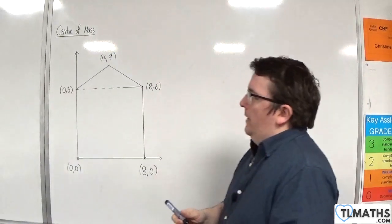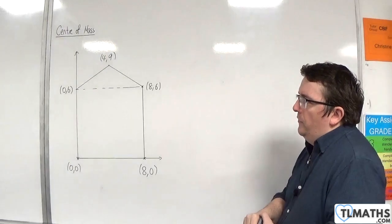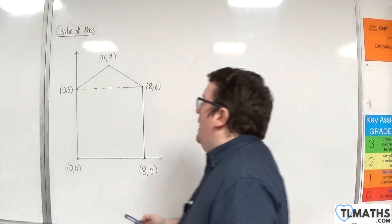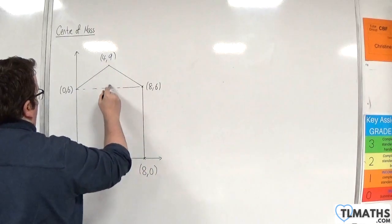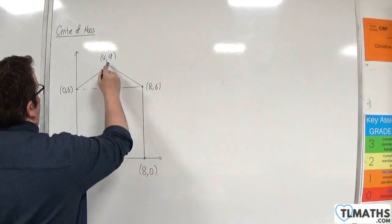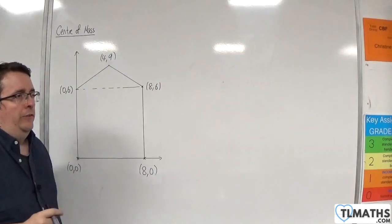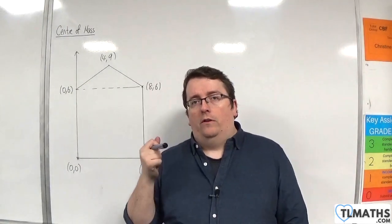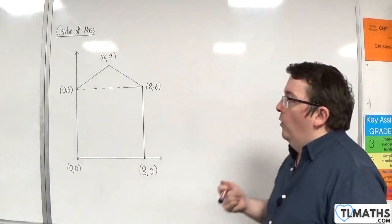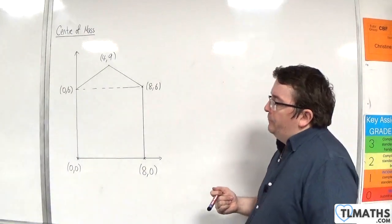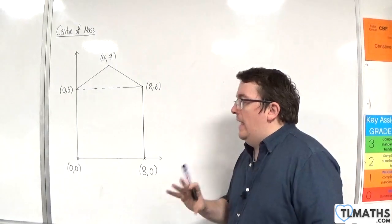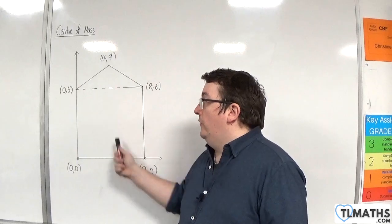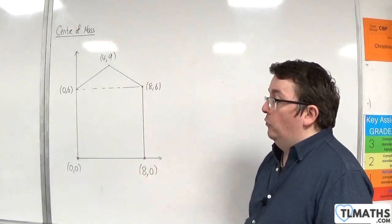Now, the first thing is to notice that this shape is symmetrical. So, there is a line of symmetry going down here, so that means that the centre of mass must lie on that line. So, you could just focus in on the y's here, and the y-coordinates, rather than doing both the x's and y's. Because we know the centre of mass is going to lie on this line, and so have x-coordinate of 4.